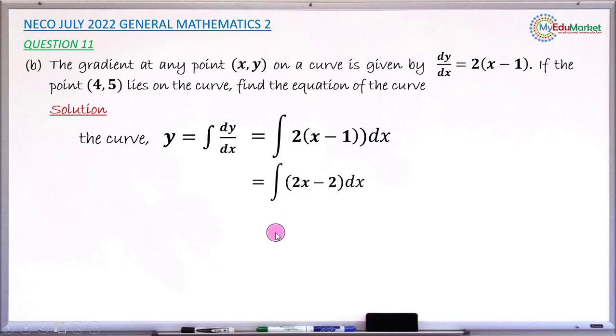Integral of 2x will now be x squared. Similarly, integral of minus 2 will now be minus 2x, then plus the constant of integration.